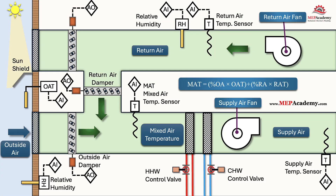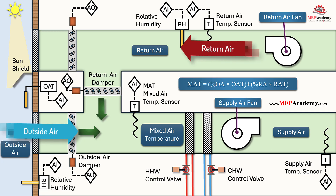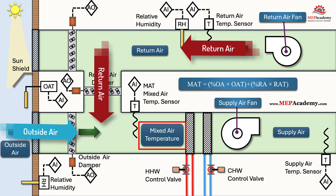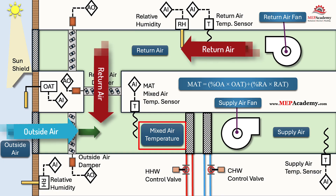In HVAC systems, particularly in air handlers and packaged air conditioners, outside air and return air are blended before passing through the cooling or heating coils. The resulting mixed air temperature is critical for coil load calculations, economizer operation, and overall system efficiency.